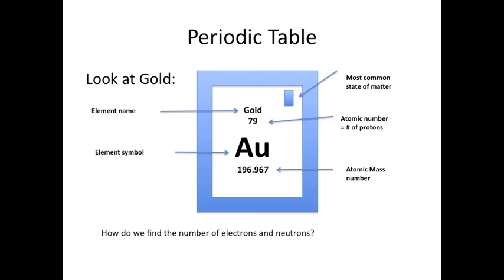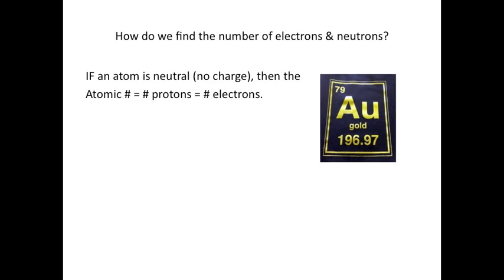Now that we know all this information, how can we find the number of electrons and neutrons from a periodic table box? Let's continue to stick with our example, gold. If an atom is neutral, in other words no charge, then the atomic number equals the number of protons and the number of electrons. So for gold, its atomic number is 79. That means it has 79 protons and 79 electrons.